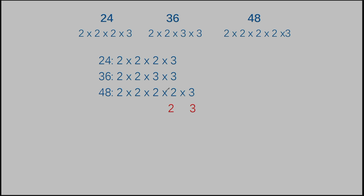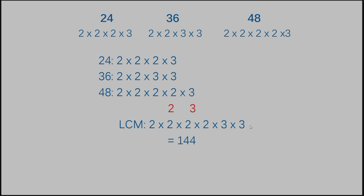Pull out every number you see represented. This time, although there are several numbers, there are only two separate numbers listed: 2 and 3. For the 2: the 24 has three 2's, the 36 has two 2's, and the 48 has four 2's — so four is the most. We write four 2's. For the 3: the 24 has one 3, the 36 has two 3's, and the 48 has one 3 — the most is two. So we multiply 2 times 2 times 2 times 2 times 3 times 3, and we get an answer of 144.